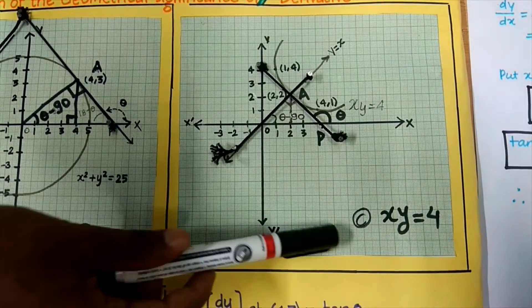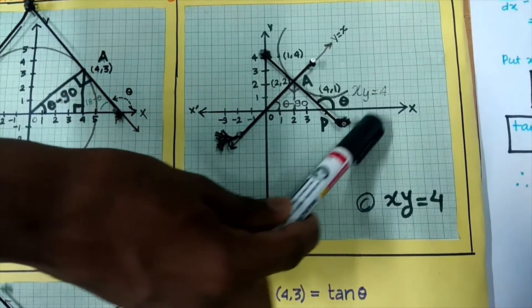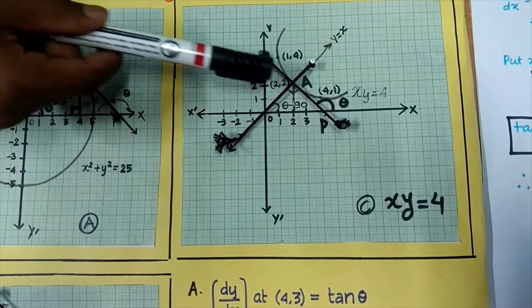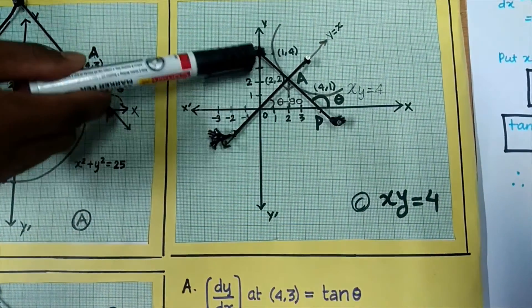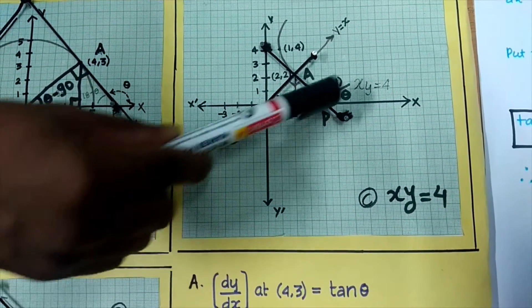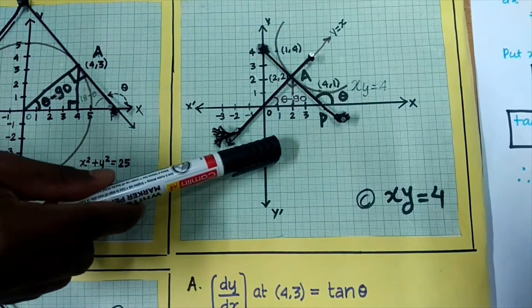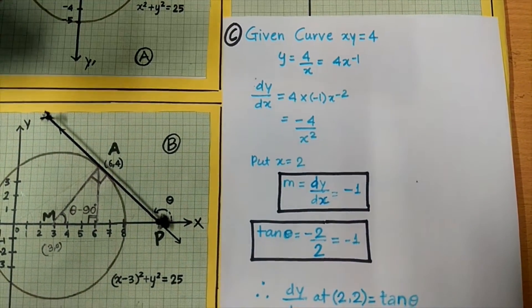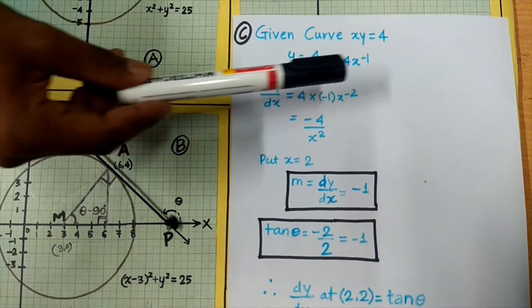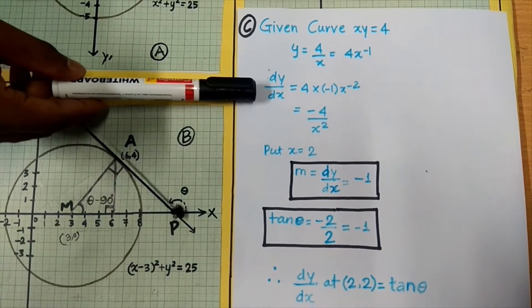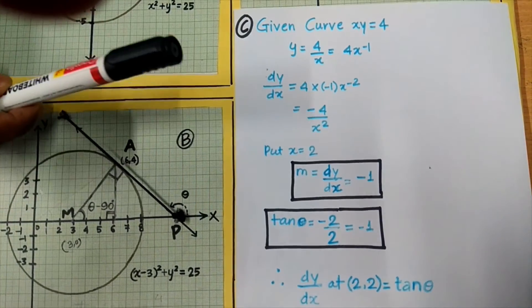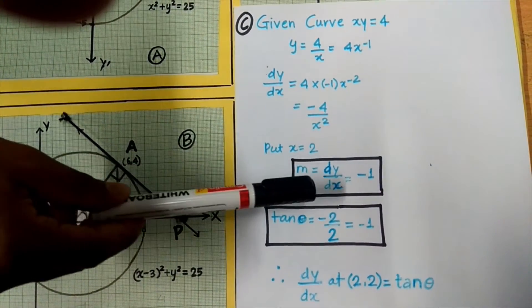In Sheet C, the graph of the curve xy = 4 is shown. We take the point A (2,2) on it. We will draw a tangent to the curve passing through point (2,2) which will intersect the x-axis at point P, making angle θ with it. We write the equation of the curve in terms of y: y = 4x⁻¹. The derivative gives dy/dx = −4/x². Putting x = 2 gives the value −1.